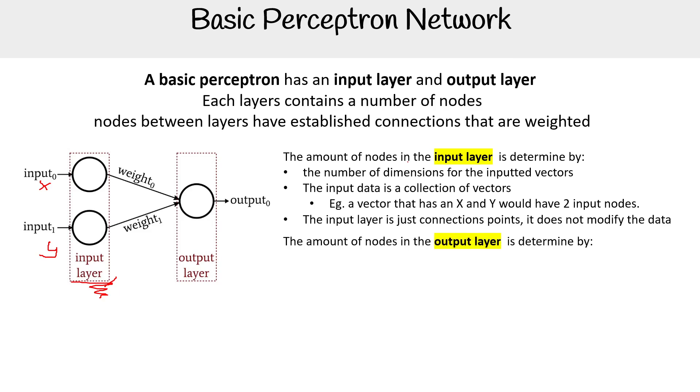So the amount of nodes in the output layer is determined by the application of the neural network. So if you have a yes and no classification, then you would only have one output node because you just want to know, is it yes or is it no? Is it zero or is it one? So it would not matter if there was 1000 input nodes. But if your classification is yes or no, you only need a single node for that.